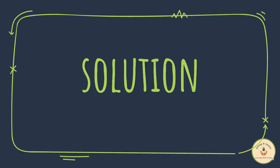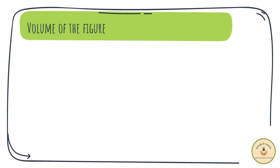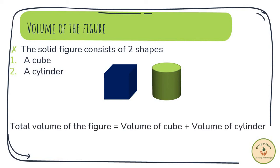Moving to the solution, we will first find the volume of the solid figure. The figure consists of two objects: a cube and a cylinder. The total volume of the solid figure will be the addition of the volumes of both these objects. Thus, the total volume of the figure will be equal to volume of cube plus volume of cylinder.